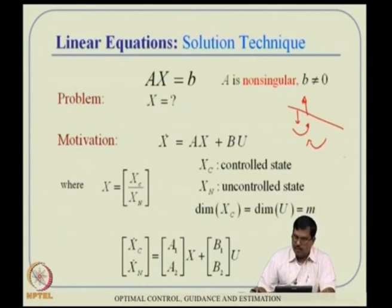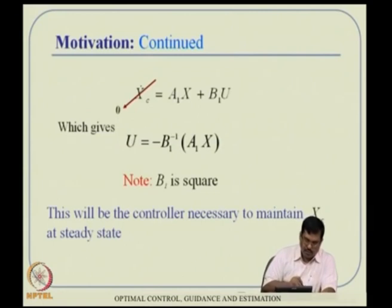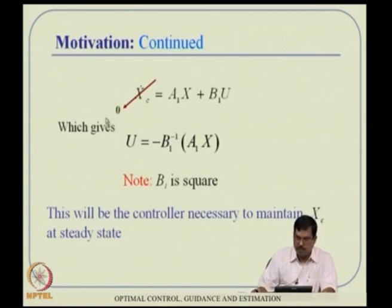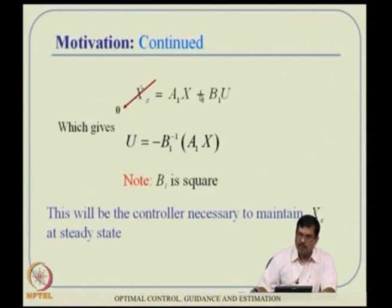We are looking for a solution where x_c_dot = 0, meaning the controlled states are operating at steady state. If we want to find the control necessary for that situation, and B1 is square and non-singular, we can apply that control action. If x_c is the pitch angle and u is the elevator deflection δE, then this elevator deflection must be computed this way to maintain x_c_dot = 0.